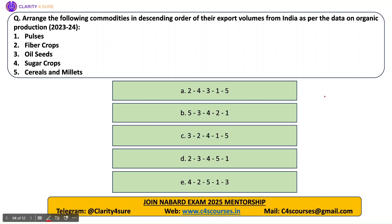Next question: arrange the following commodities in descending order of their export volumes from India as per data on organic production. This is based on data available on APIDA's website, and a similar question was asked in 2024 Phase 1. The correct descending order is: fiber crops (largest export volume), followed by oil seeds, sugar crops, cereals and millets, and then pulses. The answer is option B: 2, 3, 4, 5, 1.